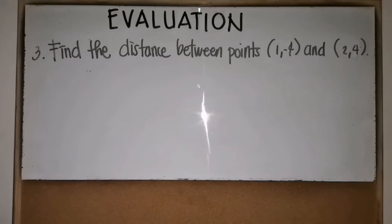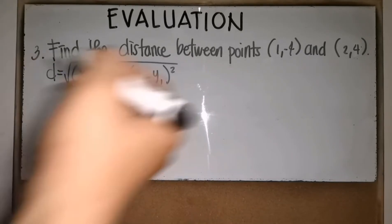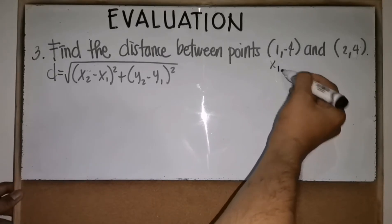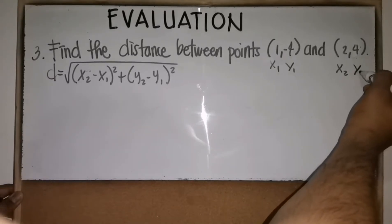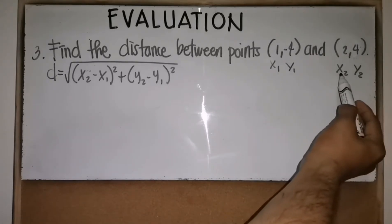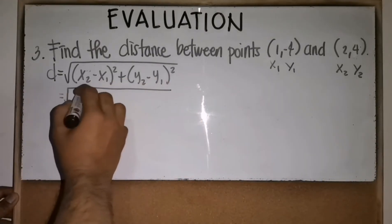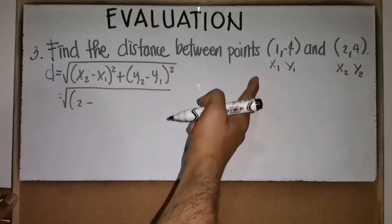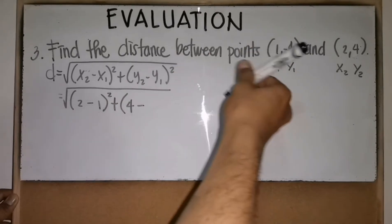Number three: find the distance between points (1, -4) and (2, 4). We use the distance formula. Labeling: x₁ = 1, y₁ = -4, x₂ = 2, y₂ = 4. Substituting into the formula: d = √[(2 - 1)² + (4 - (-4))²].